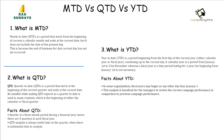The second concept is QTD. Quarter to date is a period that starts at the beginning of the current quarter and ends at the current date. Be mindful while making QTD reports as it is used in many contexts — whether the beginning of the calendar or fiscal quarter. QTD is like a financial tool that captures all the activities of the company that occurred from the start of the quarter up to the date at which the activities were collected.